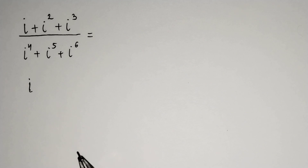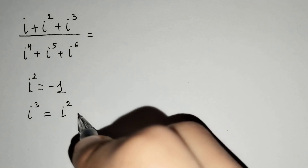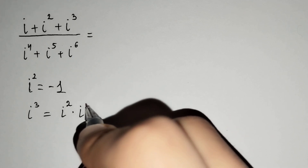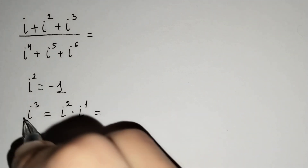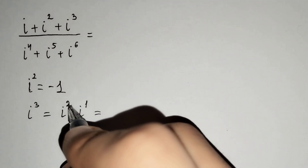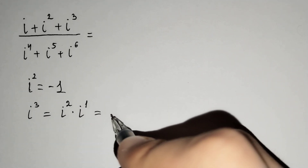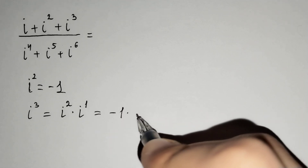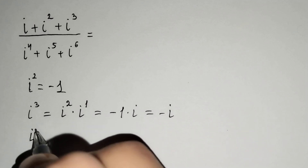From complex numbers you know that i power 2 equals minus 1. And i power 3 equals i power 2 times i, so i power 3 equals minus 1 times i, which equals minus i.